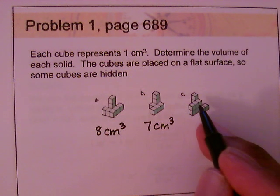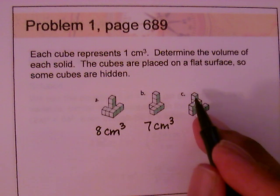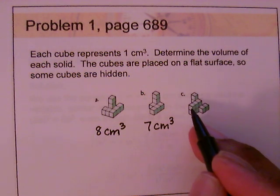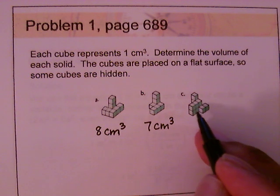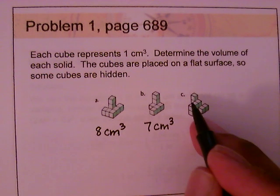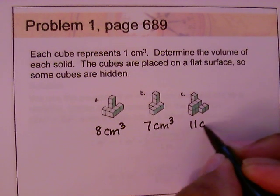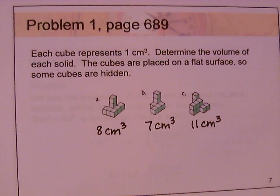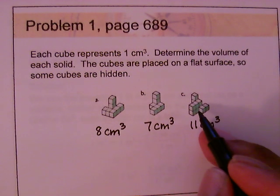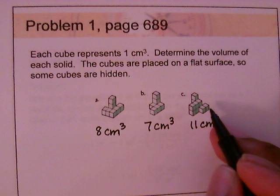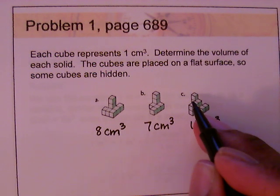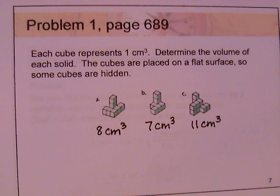Continuing part c: there's another cube back there making nine, then ten, and there's one holding the top two up making eleven. So part c is eleven cubic centimeters. The five visible cubes have one in front and one behind making six and seven, then eight, nine, ten, and one more supporting them for eleven.